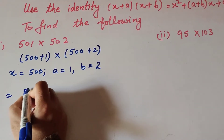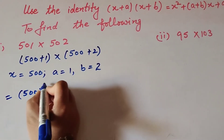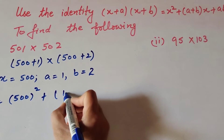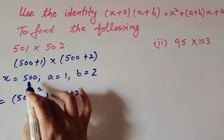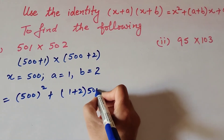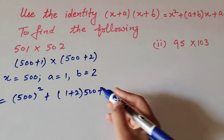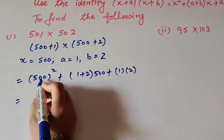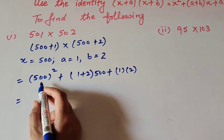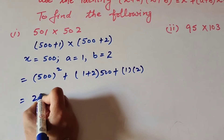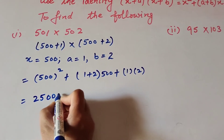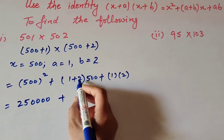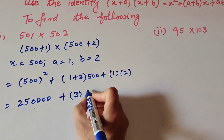First is x², where x = 500, so it is 500². Then plus (a + b) × x: a = 1, b = 2, so (1 + 2) × 500. Then plus ab, which is 1 × 2. So 500² = 500 × 500 = 250,000, plus (1 + 2) = 3 into 500.